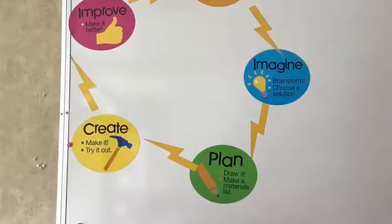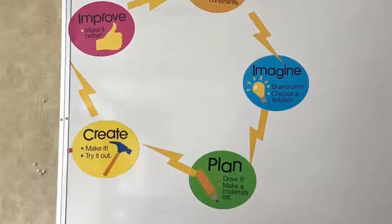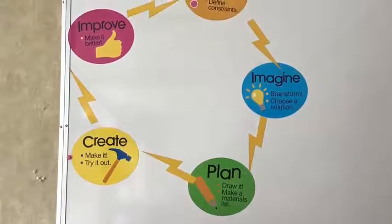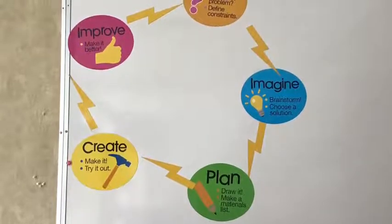How I incorporated the design cycle into my project: First, I asked those three questions. Next, I imagined and brainstormed what I thought it was going to look like, and I planned it out. I drew a detailed diagram of what I thought it was going to look like and I also made a materials list.